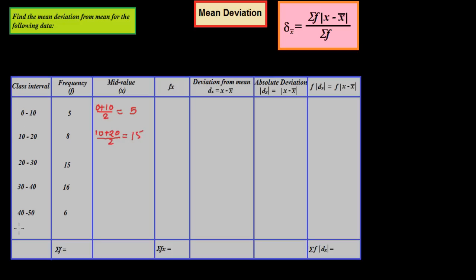The class width is the same in all class intervals — it is 10. So we find the first mid value, which is 5, and then add 10 to each successive mid value to get 15, 25, 35, and 45. These are the mid values for all five class intervals.